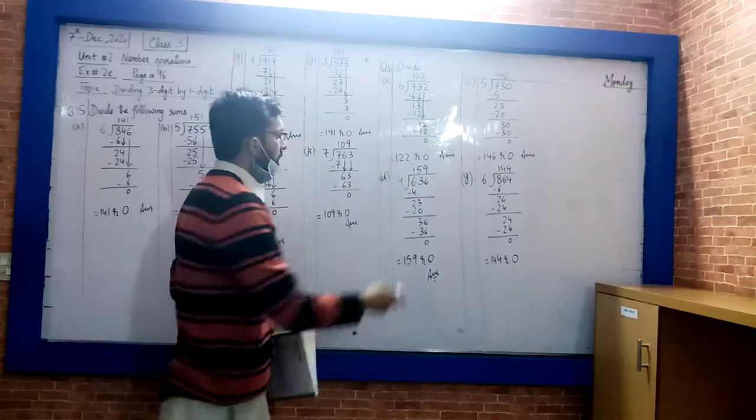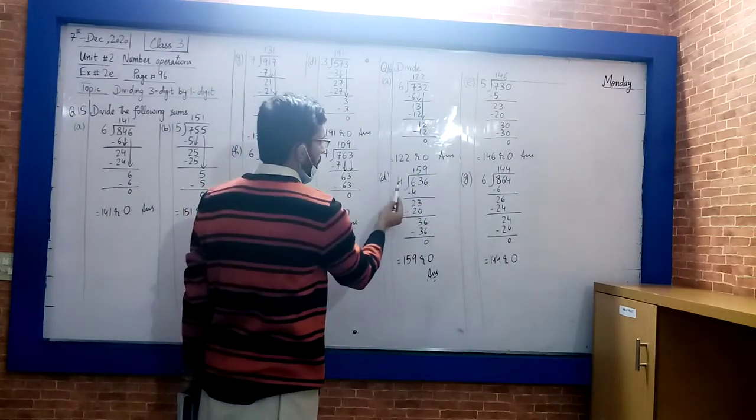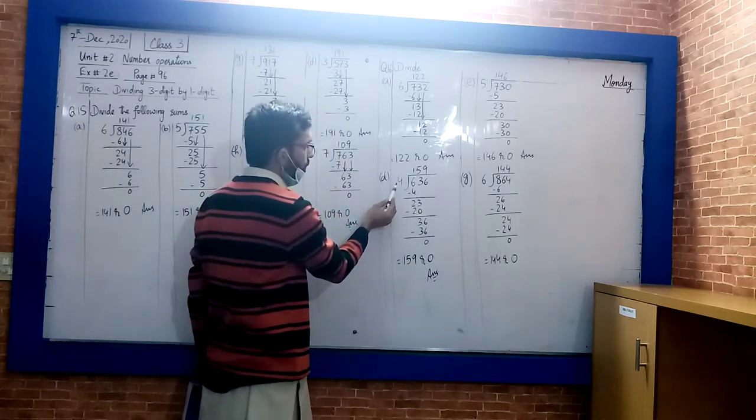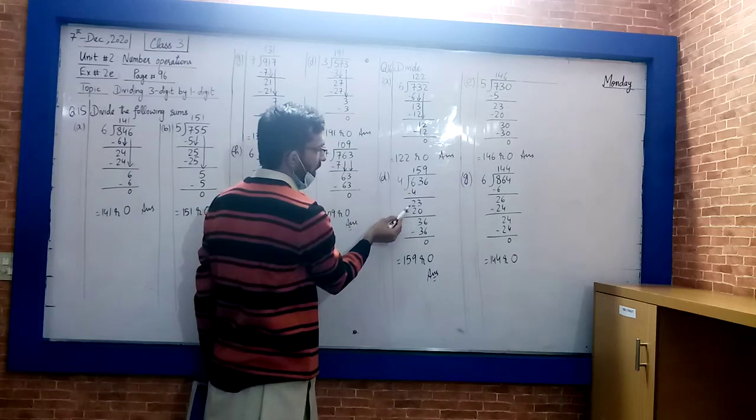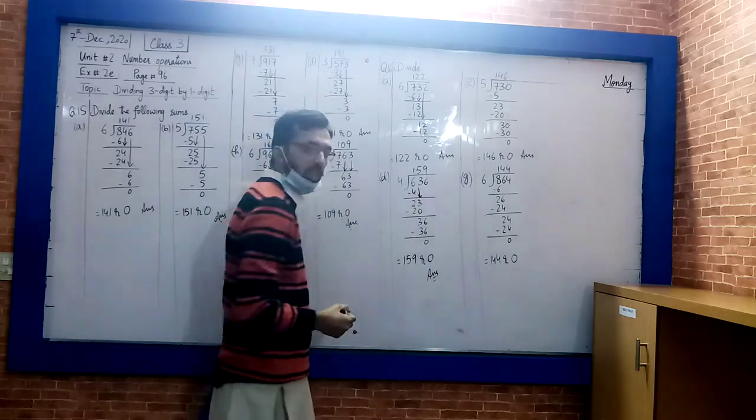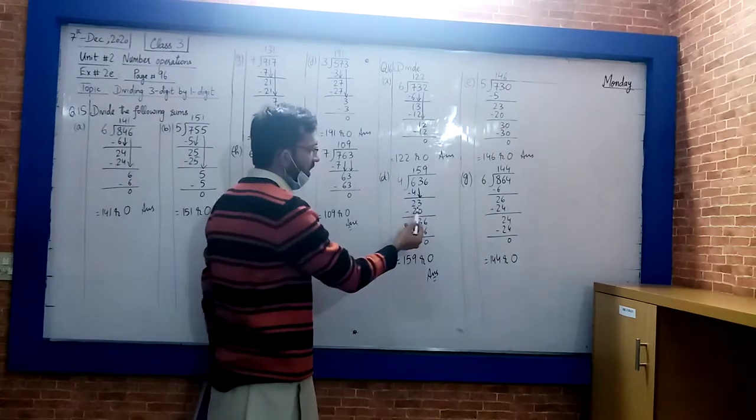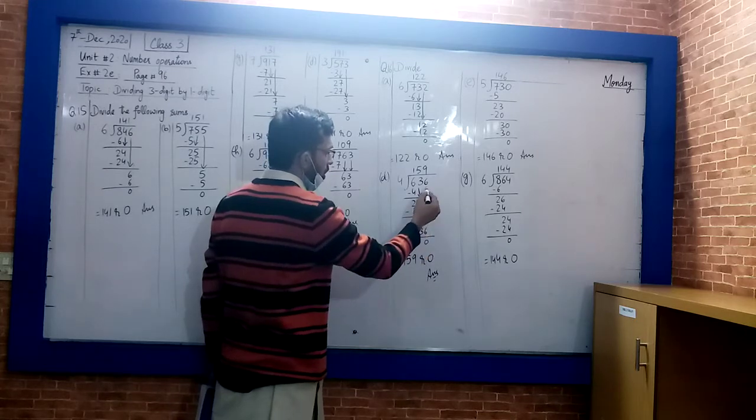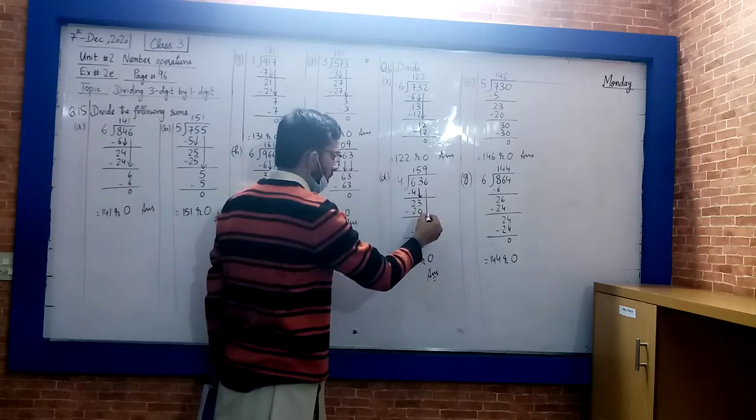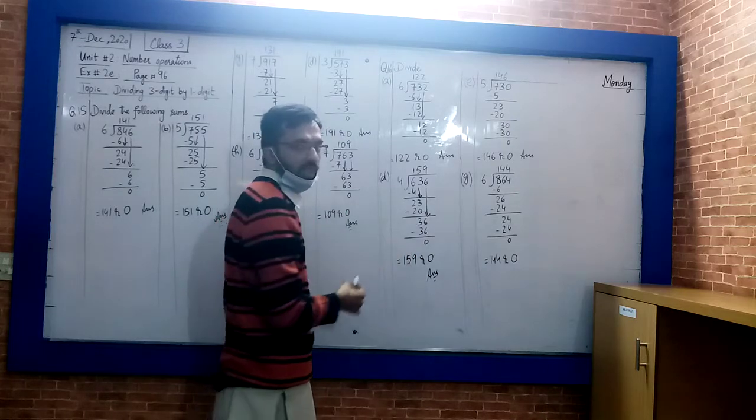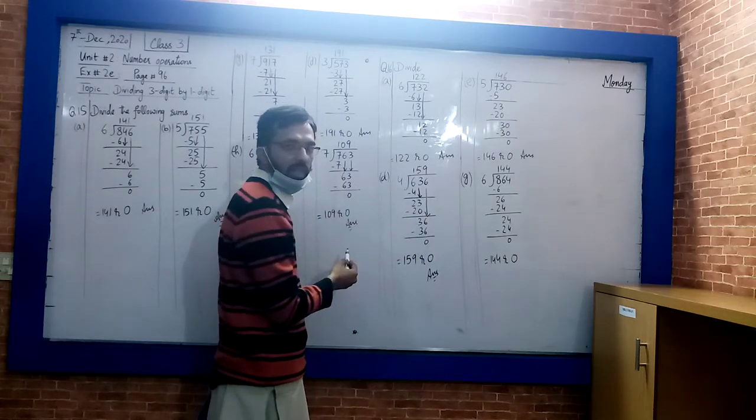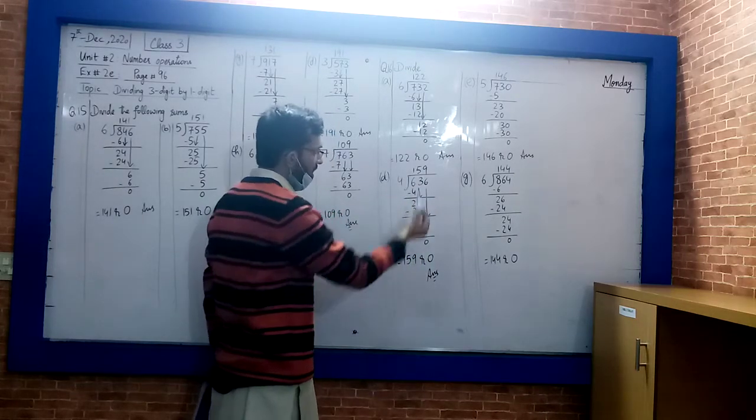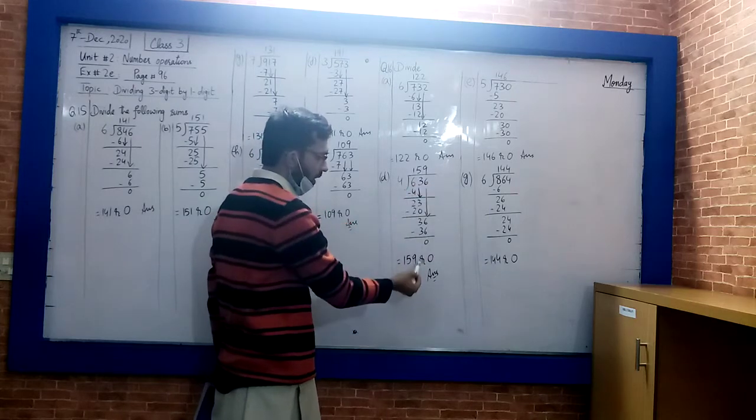Next part D: 636 divided by 4. Starting with the first digit, 4 into 6 goes 1. 6 minus 4 is 2. Next digit 3 comes down making 23. 4 into 23 goes 5. 4 times 5 is 20, minus gives 3. 6 comes down making 36. 4 into 36 goes 9. 4 times 9 is 36, minus gives 0. Answer is 159, remainder 0.